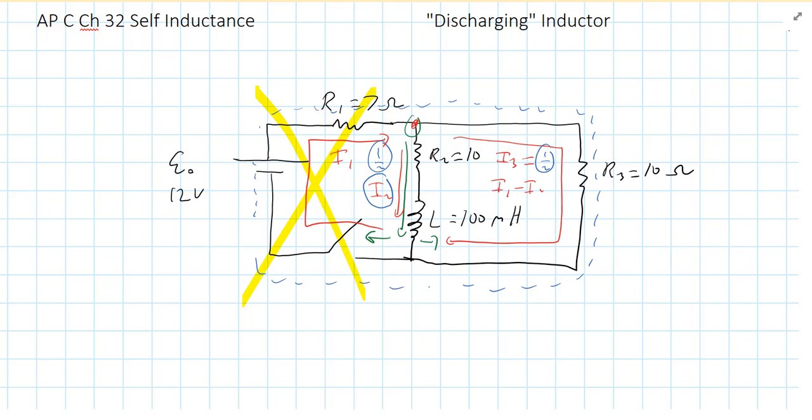Right after we open the switch, I2 is still going to be half an amp. But current will flow down through R2 and L, and it will then flow up through R3 in a counterclockwise loop around that little right-hand loop there.